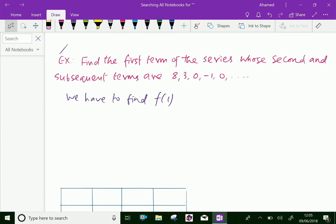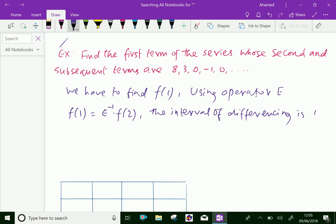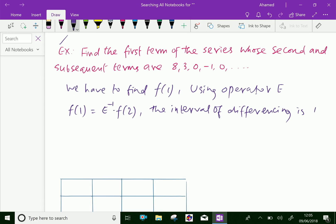By using operator E, we will get f(1) equal to e to the power minus 1 of f(2). The interval of differencing is 1. Now which is equal to... we know that e equals 1 plus delta, that is (1 plus delta) to the power minus 1.